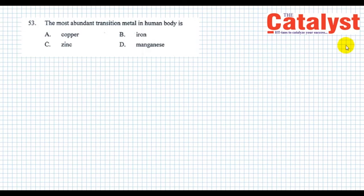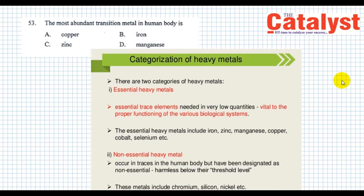Heavy metals may be classified into two categories. One is essential heavy metals—needed in very low quantities and vital to proper functioning of various biological systems. The essential heavy metals include iron, zinc, manganese, copper, cobalt, selenium, etc. The other category is non-essential heavy metals. They occur in traces in the human body but have been designated as non-essential because they are harmless below their threshold level. These metals include chromium, silicon, nickel, etc.